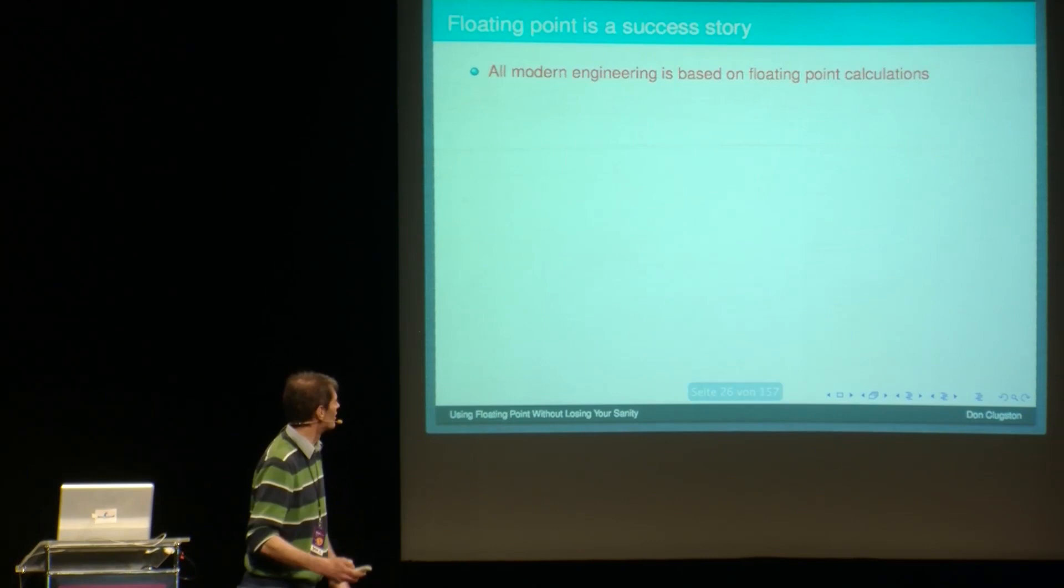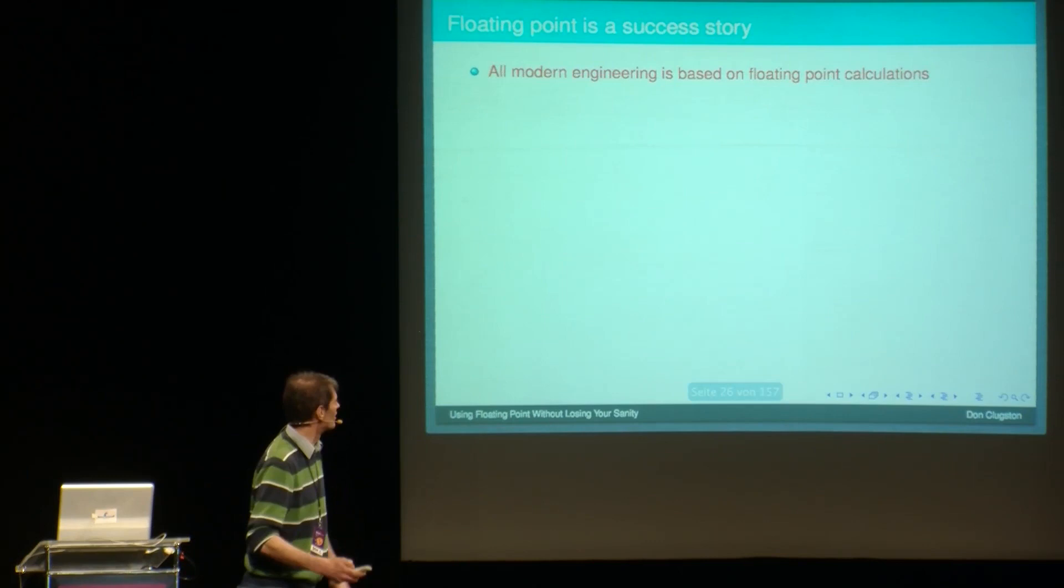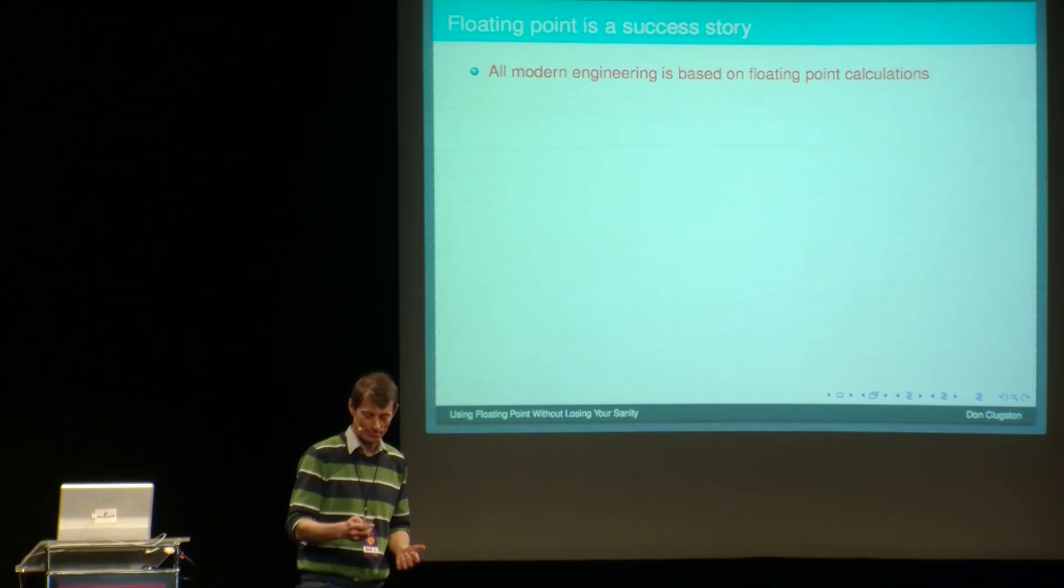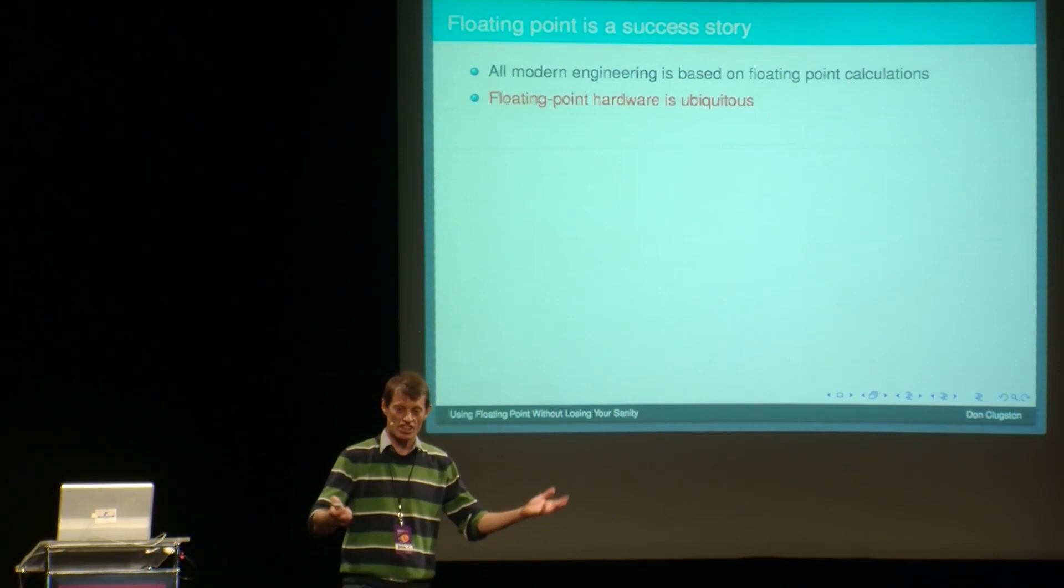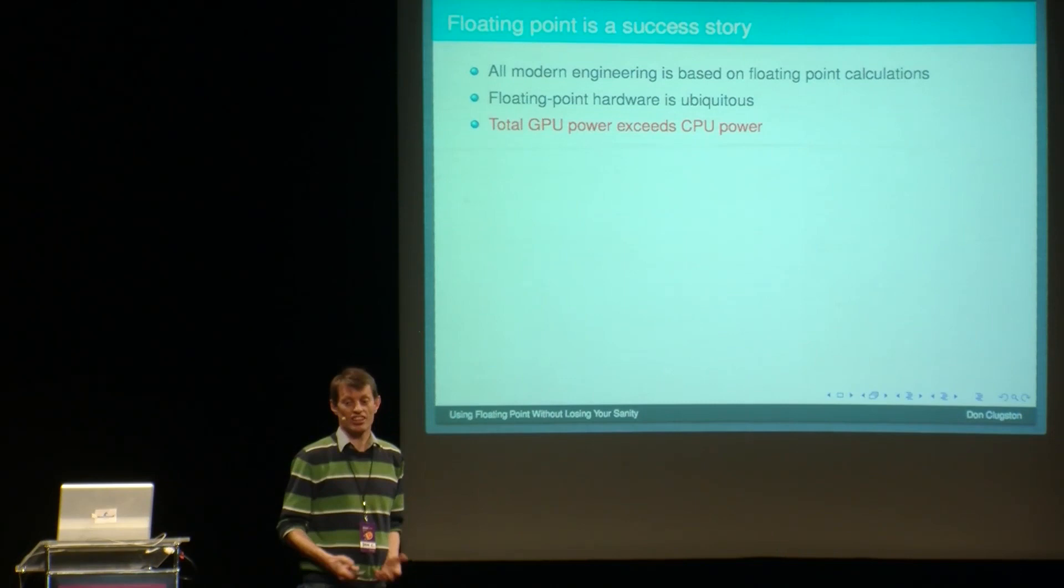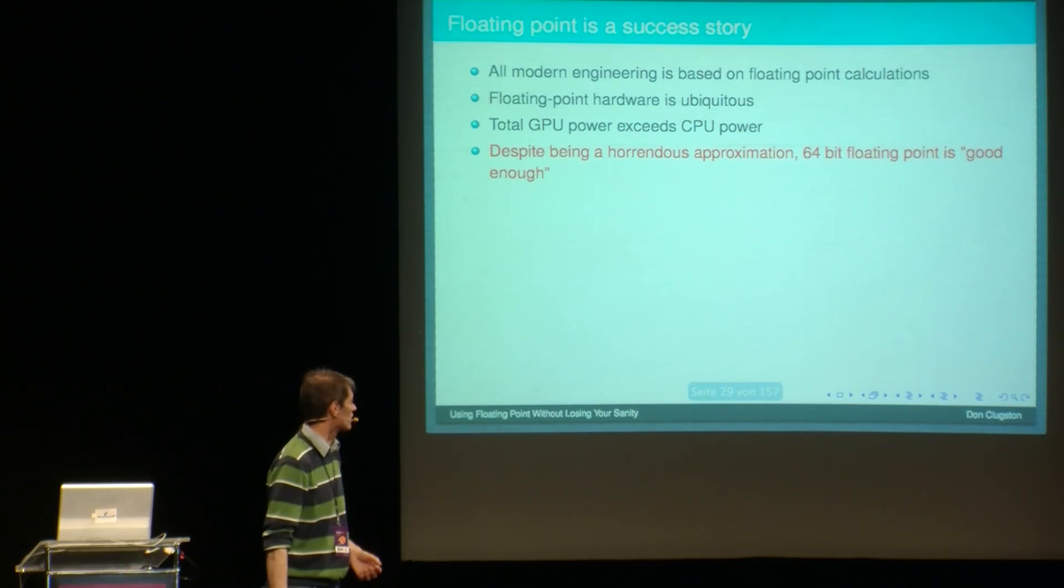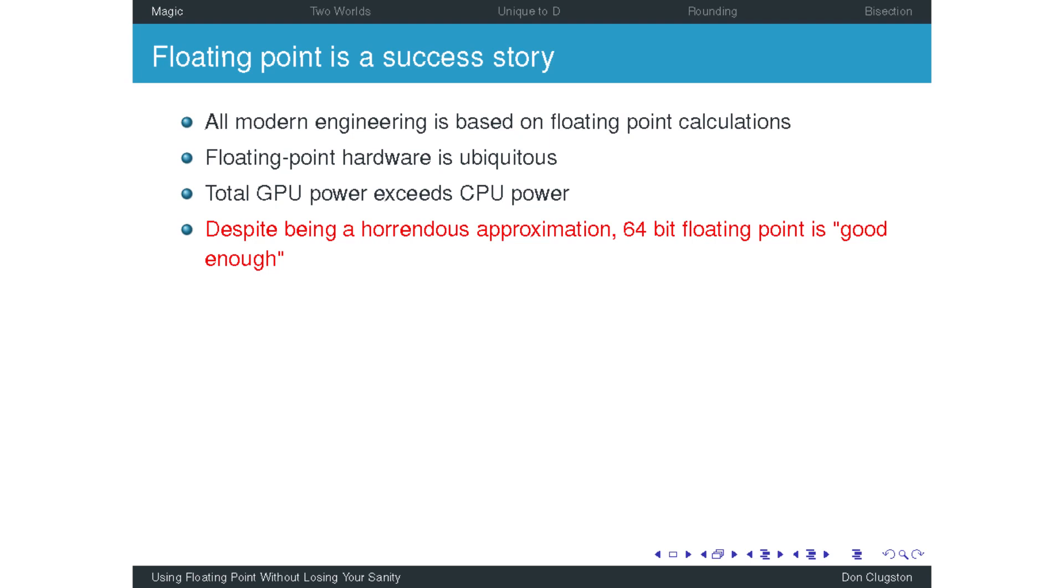Okay. Let's see, what have we got? Addition isn't even associative. 35 plus a billion we just saw this one, minus a billion is 64. But 35 plus a billion minus a billion is 35. Why are we using this grotesque, fraudulent type? It's lies. Well, the reason is pragmatism. Floating point is a success story. Modern engineering is built on floating point calculations. We've got hardware, floating point hardware is ubiquitous. It's everywhere. It's cheap. And now GPUs are even multiplying the effect even more. We've got devices that can do masses of floating point in parallel. And we've got GPU power now exceeding CPU power.